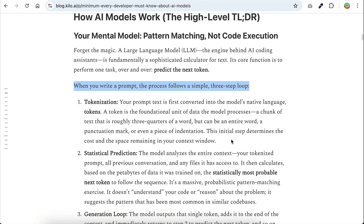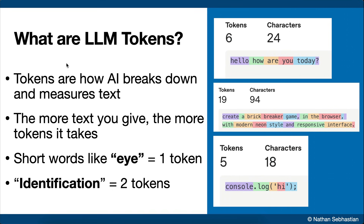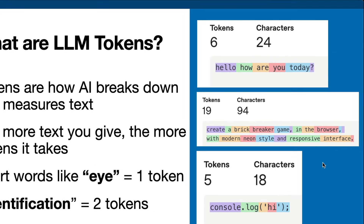First, whatever you type gets broken down into tokens. In the world of AI, tokens are the native language of LLMs — think of them like little chunks or building blocks that make up your words and prompts. For example, a short word like 'AI' will be one token, while a longer word like 'identification' would be split into two tokens. We have some example token calculations on the right side here: short phrases like 'hello, how are you today' become six tokens, a prompt for a brick-breaker game is 19 tokens, and a simple console.log code becomes five tokens.